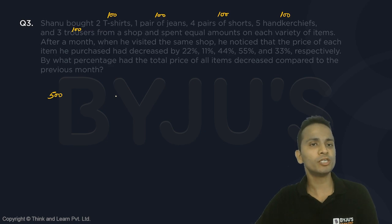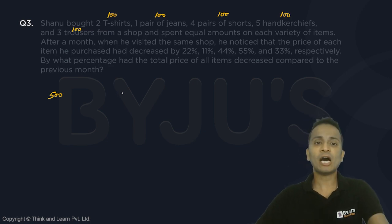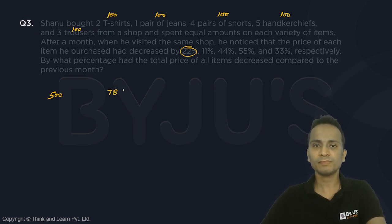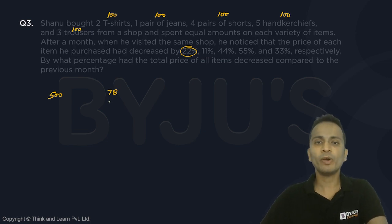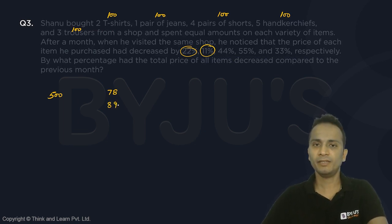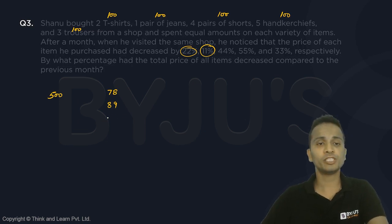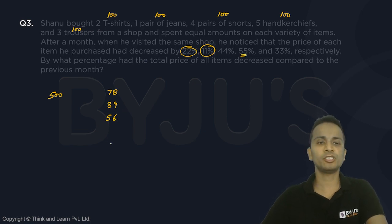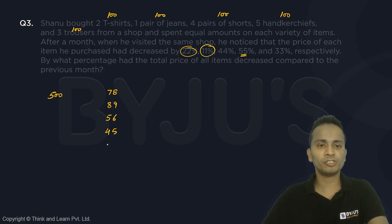Earlier the price of two shirts was 100; now it will reduce by 22% and become 78. One pair of jeans was 100, reduced by 11%, becomes 89. Four pairs of shorts were 100, reduction of 44%, becomes 56. Handkerchiefs reduced by 55%, becomes 45. Trousers reduced by 33%, becomes 67.